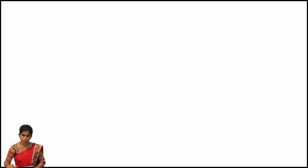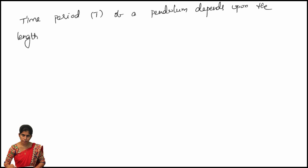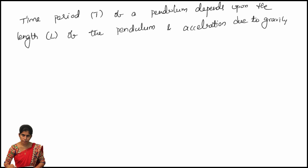In this video, we will solve a problem using Rayleigh's method on dimensional analysis. In the previous video, we learned how to solve problems using Rayleigh's method. The problem is: the time period T of a pendulum depends upon the length L of the pendulum and acceleration due to gravity G. Derive an expression for the time period.